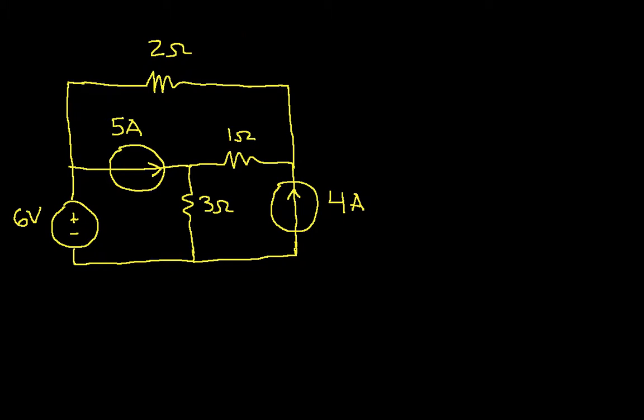In the introduction to mesh analysis video, we did a circuit that had only independent voltage sources, and that's easy. However, when we have independent current sources, things become a little more complicated, as we'll see as we go through this example. So, let's begin this example.